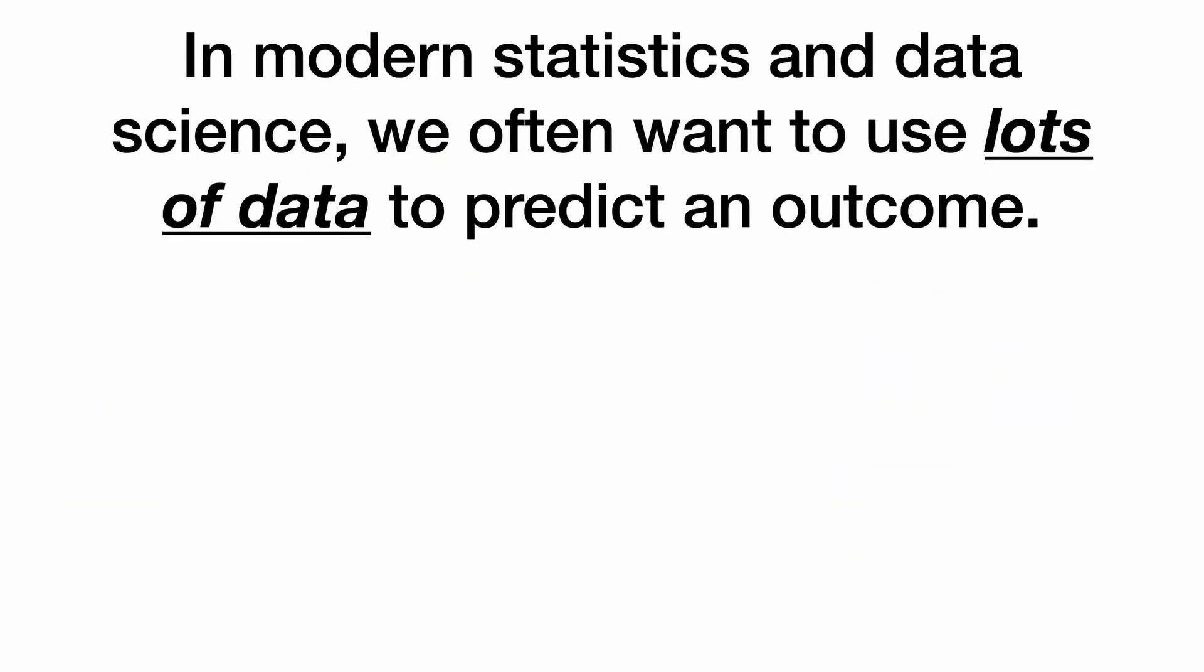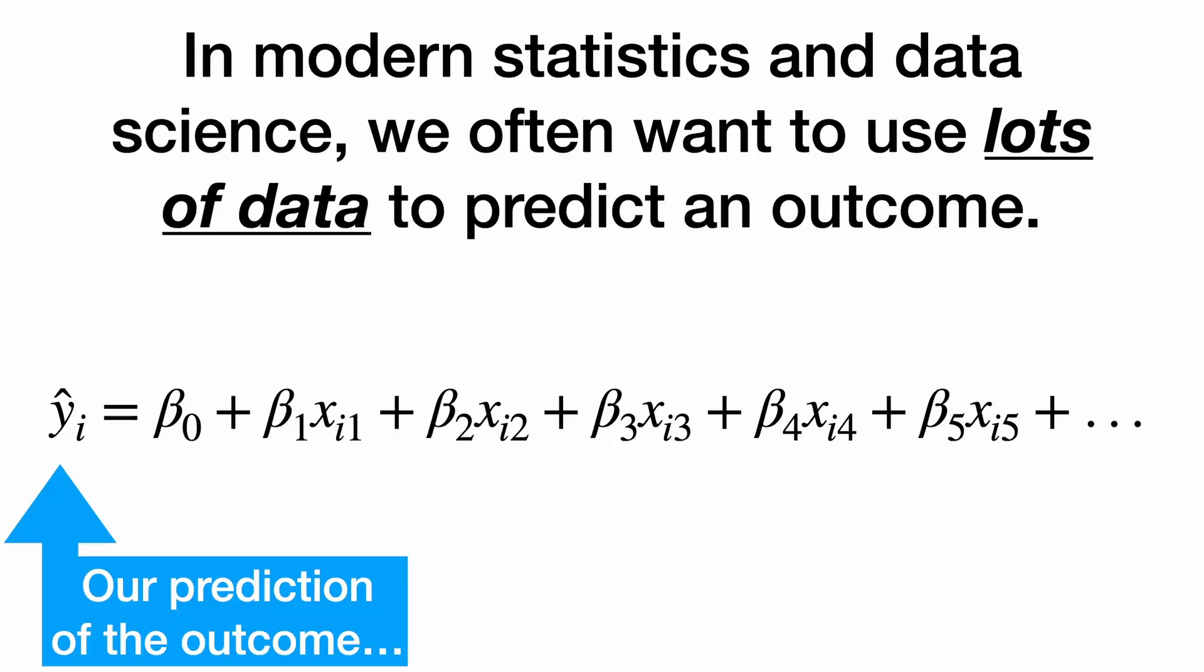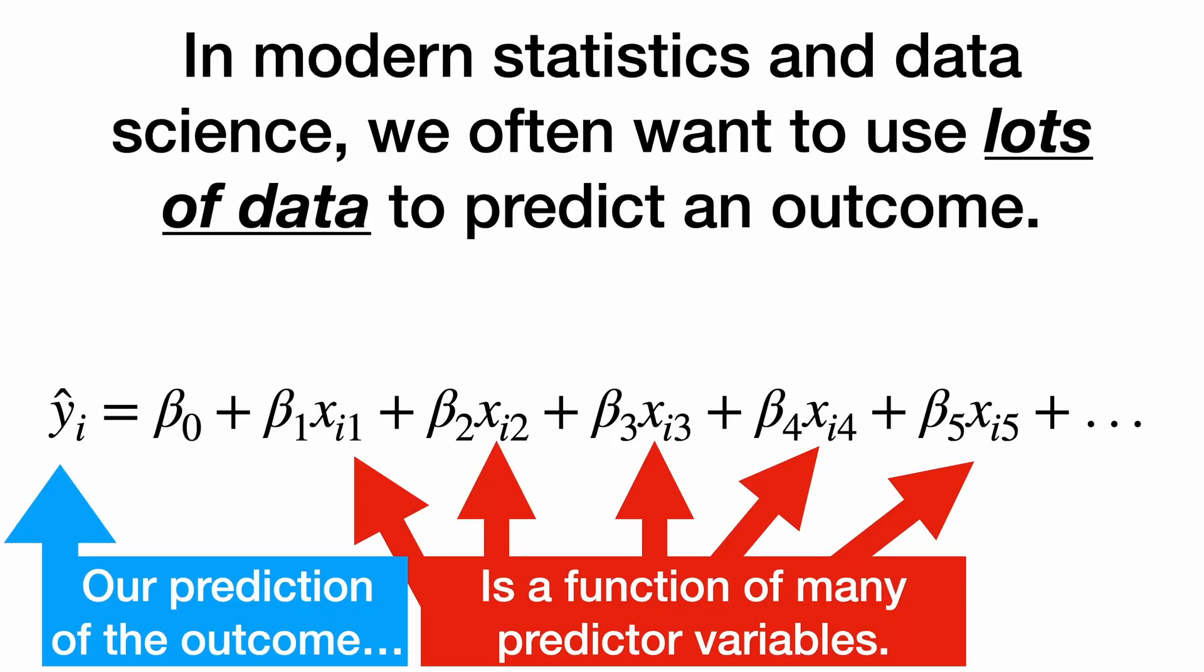In modern statistics and data science, we often want to use lots of data to predict an outcome. We get an equation like this, where our predicted value of the outcome is a function of many predictor variables.